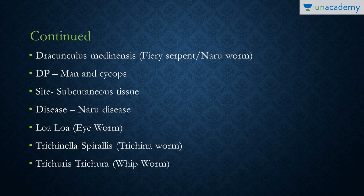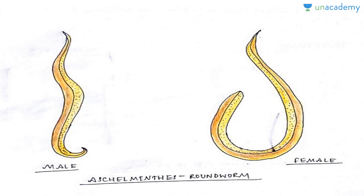Other notable worms: Dracunculus medinensis, also known as the fiery serpent or Guinea worm, causes Naru disease and lives in subcutaneous tissue. It has two hosts — man and Cyclops — and has been eradicated from India. Loa loa is the eye worm. Trichinella spiralis is the trichina worm. Trichuris trichiura is the whipworm. In these worms as well, the female is longer and thicker, while the male is shorter, more slender, and has a curved posterior end.